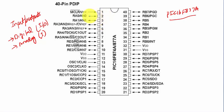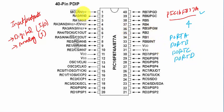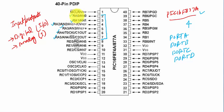The PIC 16F877A microcontroller has four ports: Port A, Port B, Port C, and Port D. All these ports have different functionalities. Starting from pin number 2 to pin number 7, these are Port A pins: RA0, RA1, RA2, RA3, RA4, and RA5. All these pins belong to Port A — for example, RA0 means bit 0 of Port A, and RA1 means bit 1 of Port A.